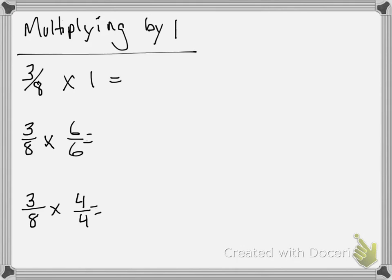Here they are. Multiplying by 1. If we multiply anything by 1, it doesn't change the value, and fractions are the same. So 3 eighths times 1 is going to be 3 eighths. 3 eighths times 6 sixths.